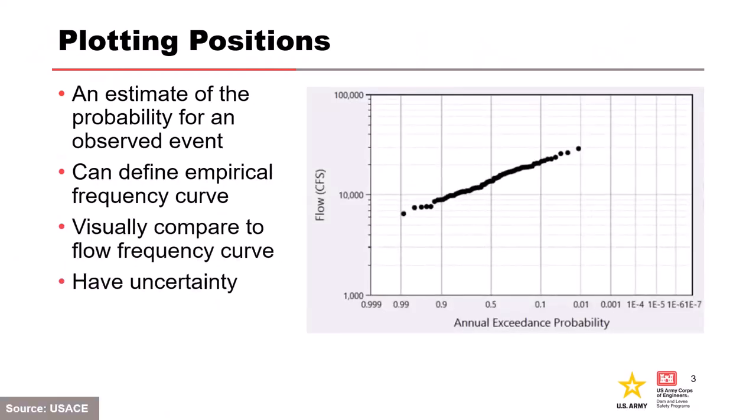As we work through some of these slides, you're going to see some things you're not used to — axes or plots that don't look quite right compared to what you're used to in flood frequency. We're going to start from a more statistical point and take steps to move into the types of plots and analysis you're used to seeing. Plotting positions are an estimate of the probability for an observed event. They can be used to define an empirical frequency curve for flow frequency analysis, and are commonly used to visually compare to an analytical flow frequency curve.